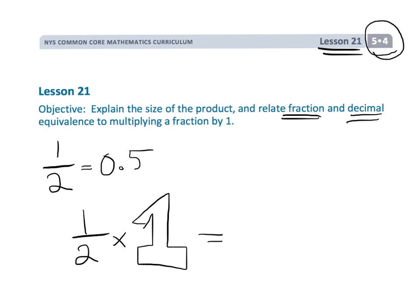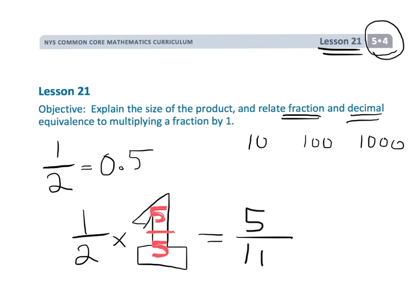Because anything times 1 is itself, we want the denominator to be some sort of power of 10 — like 10, 100, or 1,000. So we can think of that 1 as 5 over 5. 1 times 5 is 5, and 2 times 5 is 10. So even though 1 half looks different from 5 tenths, we know they're equivalent because we multiplied by 1 — specifically, 5 over 5.